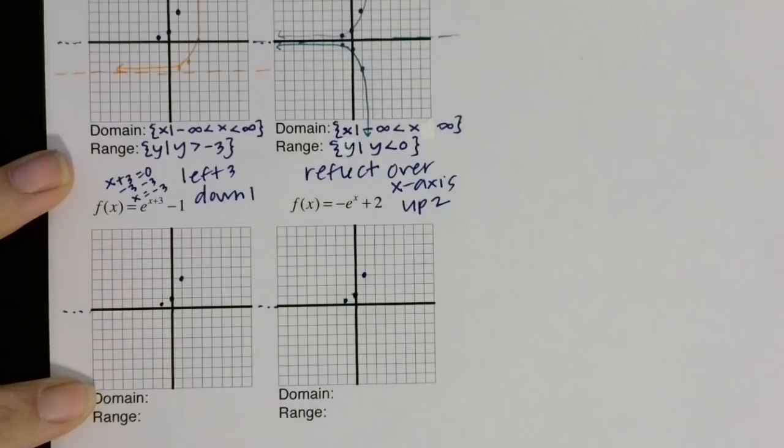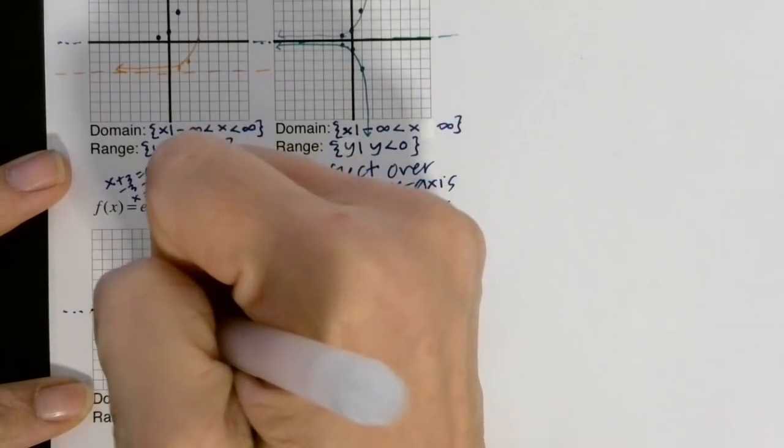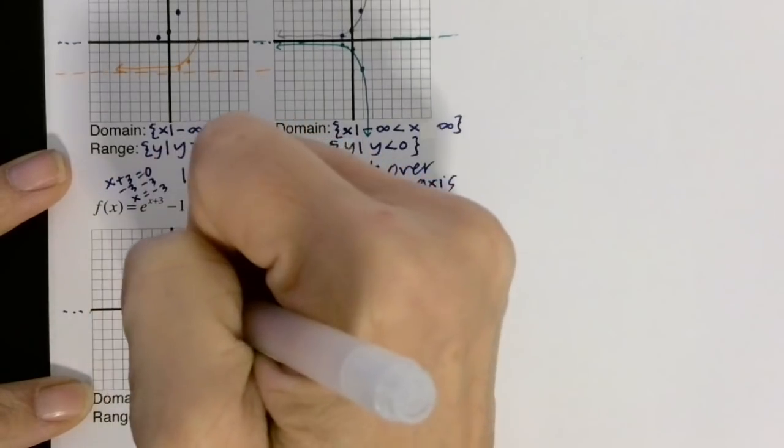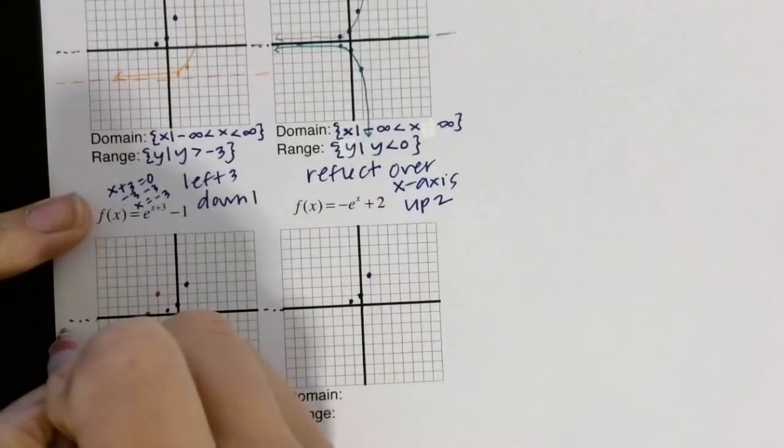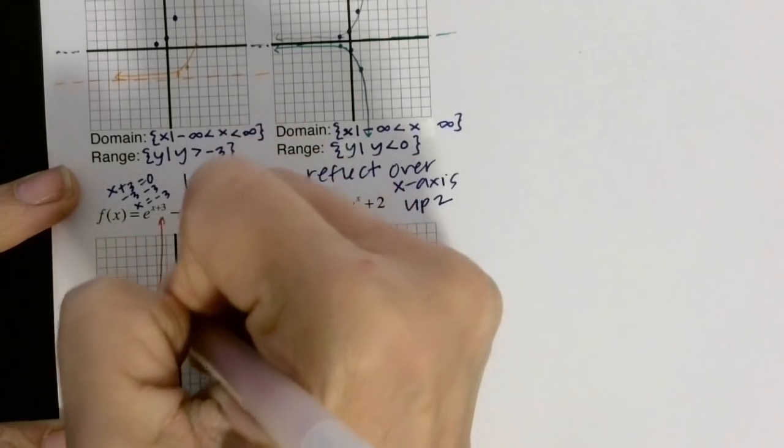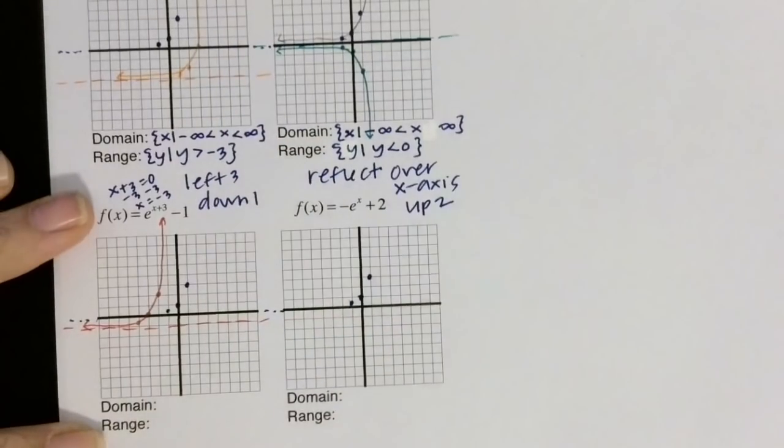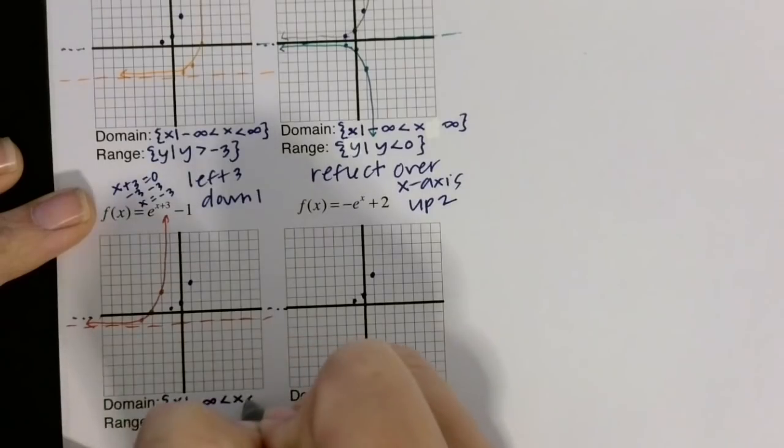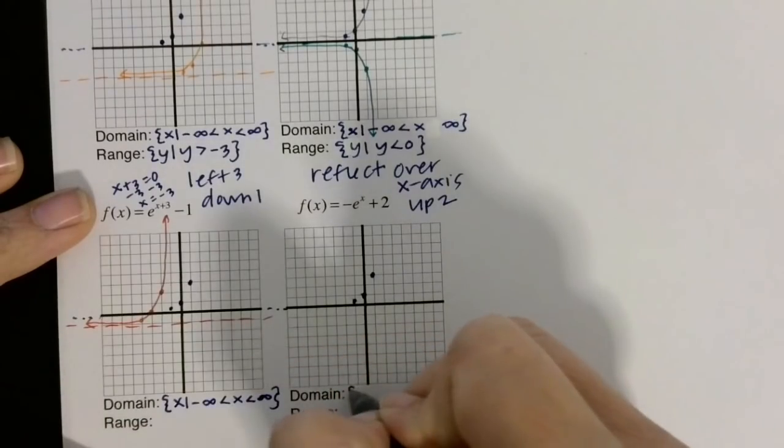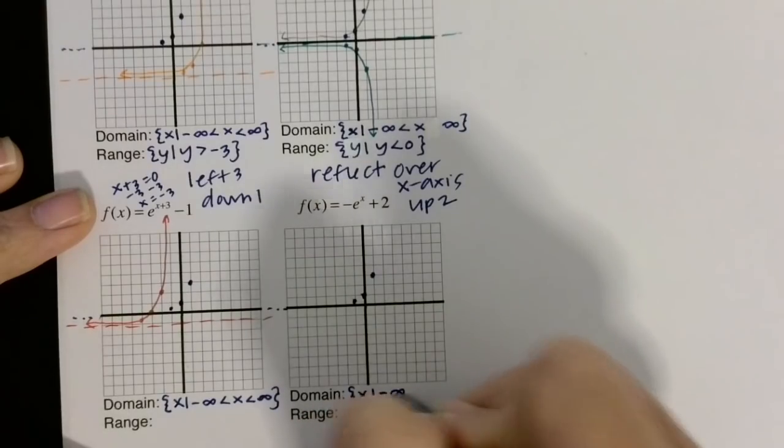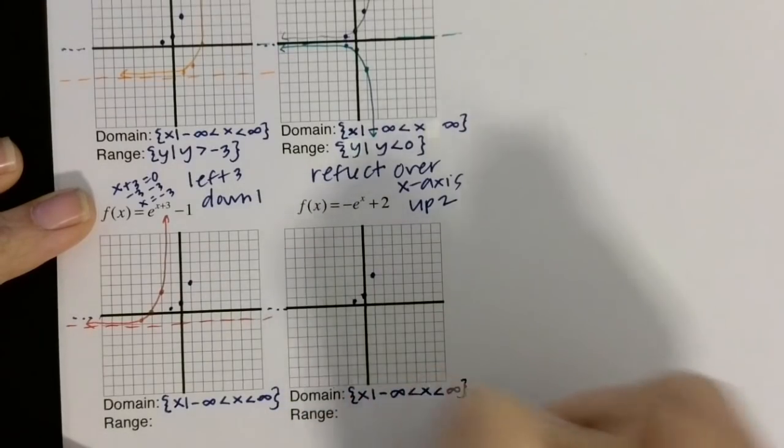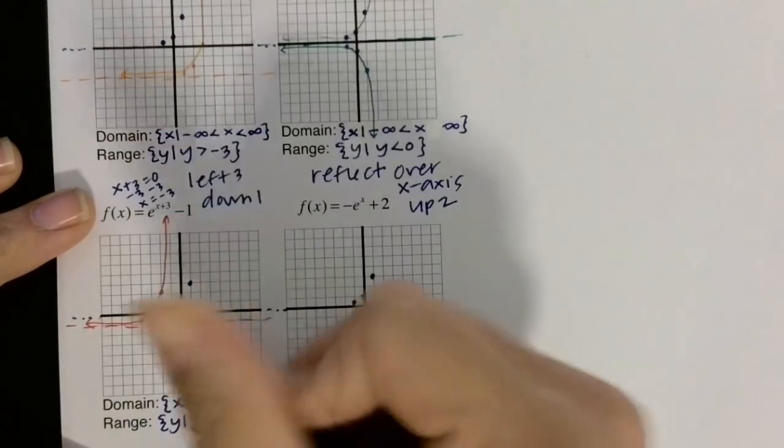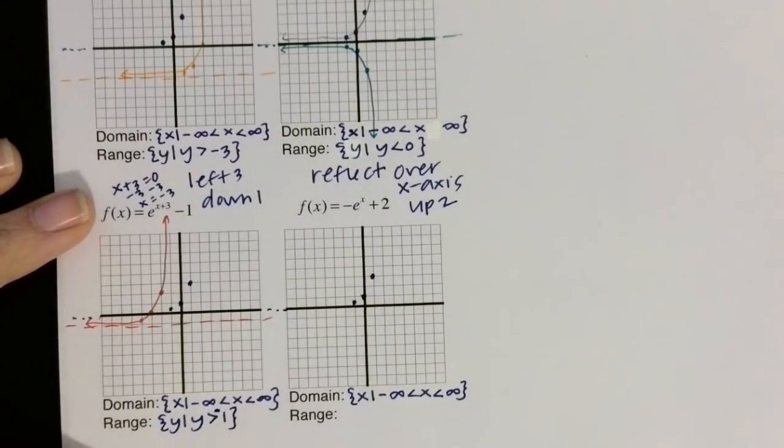Moving on. We're going left 3 and down 1. So we go left 3, 1, 2, 3, down 1. Left 3, down 1. Left 3, down 1. There's our asymptote. And then coast along the asymptote like that. So there's our graph. Domain, I'm going to do this domain too since it's the same. And then the range on this one, there is no reflection, so it's greater than negative 1, right? Because it went down 1, so it's negative 1.